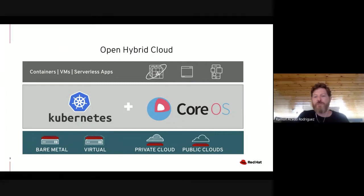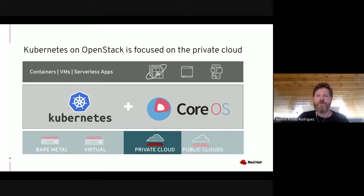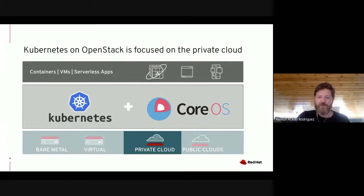Kubernetes has been pretty good at doing that. Kubernetes, along with CoreOS, allows us to do deployments on different types of footprints while keeping the experience as consistent as possible. Today we're going to be talking about Kubernetes on OpenStack. OpenStack is our private cloud infrastructure that is going to allow us to provide this consistency for the experience we want to offer our developers with Kubernetes.